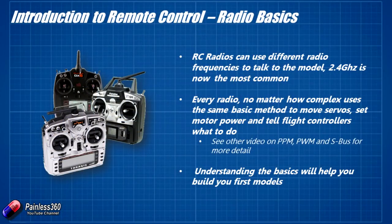The majority of radios you're going to come across in RC these days are going to be using one of the 2.4 gigahertz schemes, transmitting and receiving on 2.4 gigahertz. All manufacturers have a slightly different way of sending and receiving the data. Every radio, no matter how complex, uses the same basic methods to move servos, set speeds from speed controllers, and tell flight controllers what they need to do. The connection from the radio receiver to servos moving control surfaces or to a flight controller in a multi-rotor all uses the same basic methods. The most basic is something called PWM.